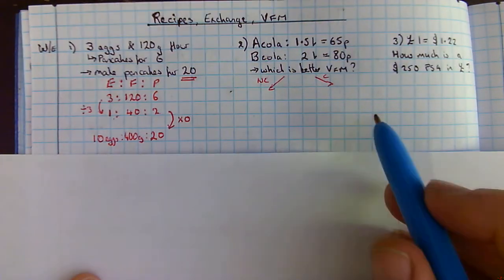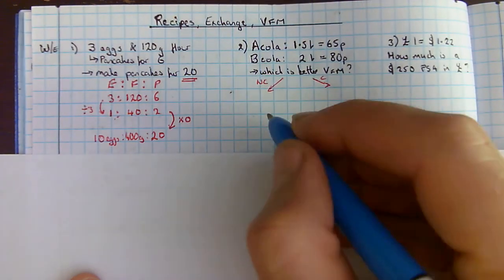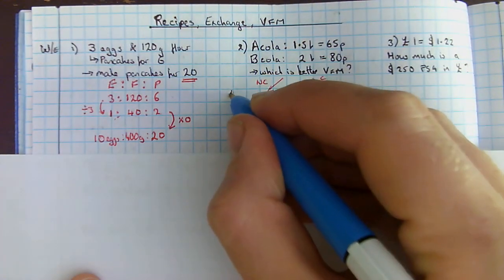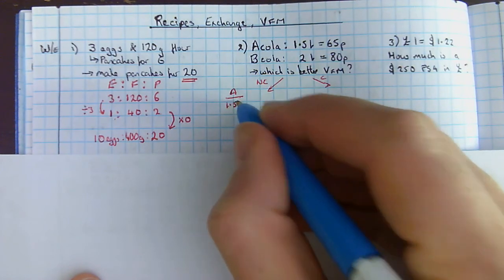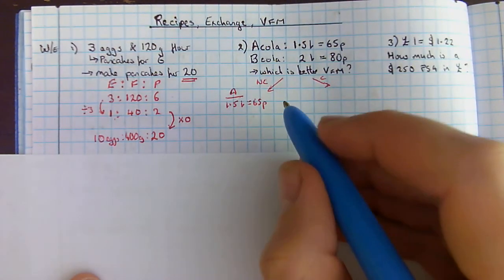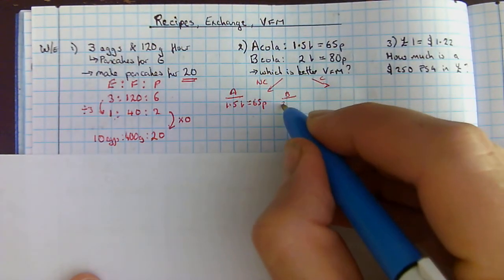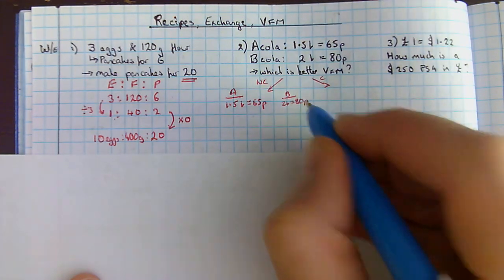So I've got A cola is 1.5 litres equals 65p. So here's A, 1.5L equals 65p. And B is 2L equals 80p.